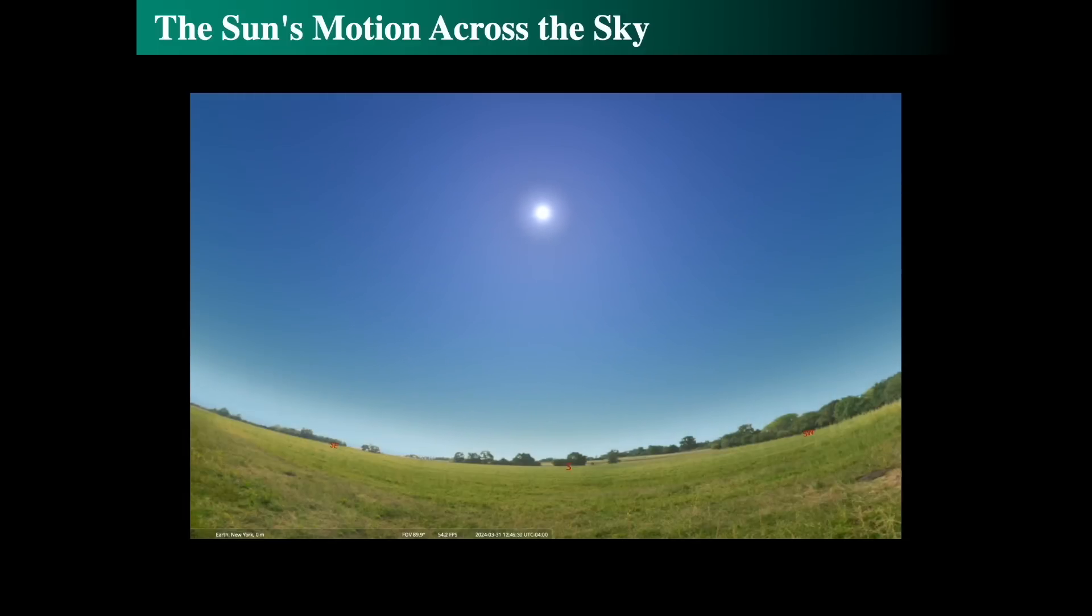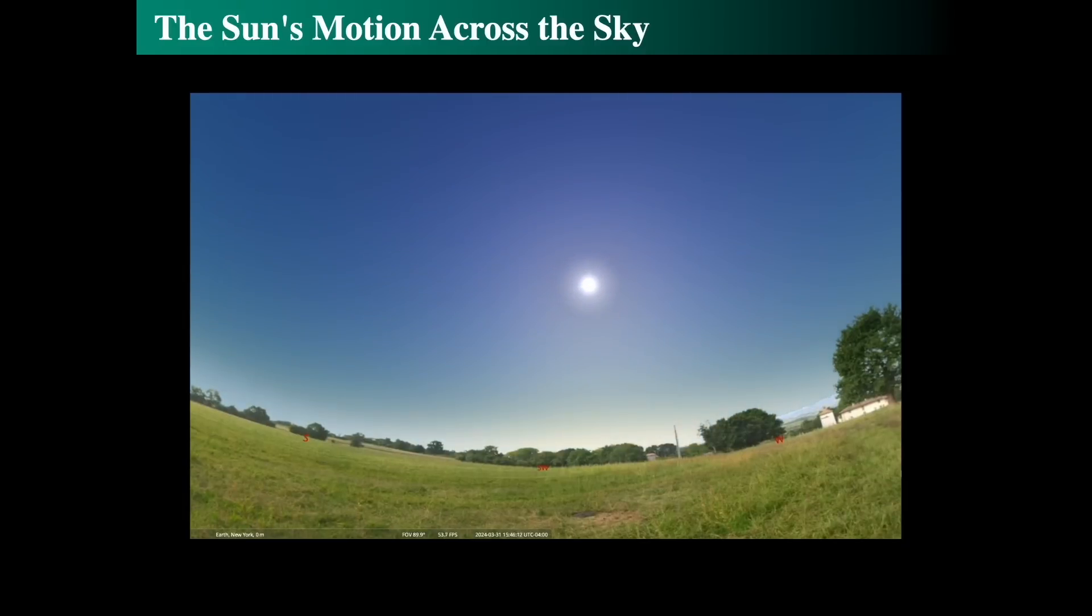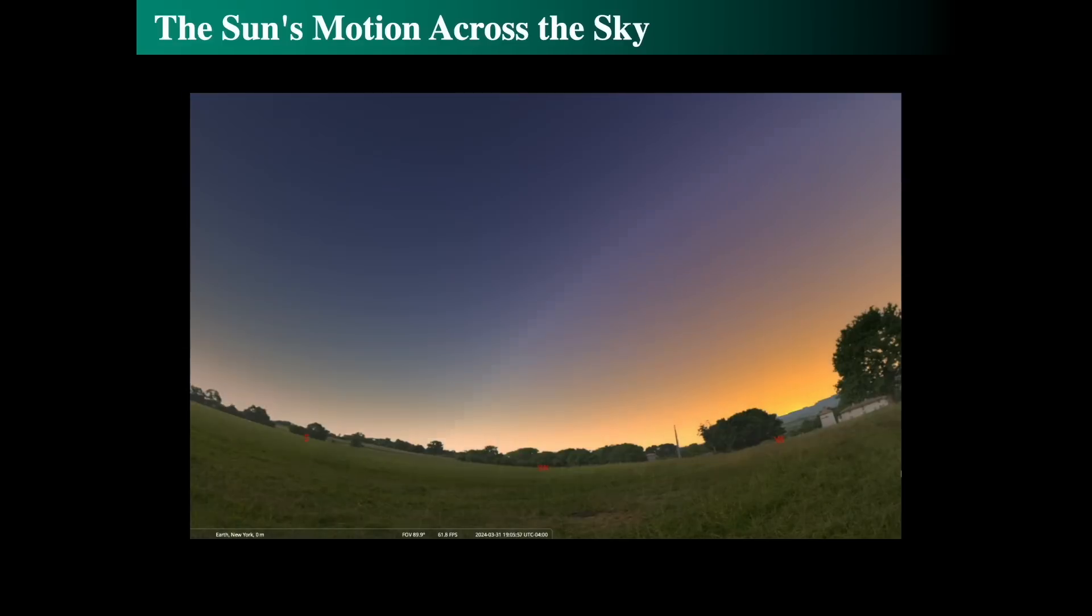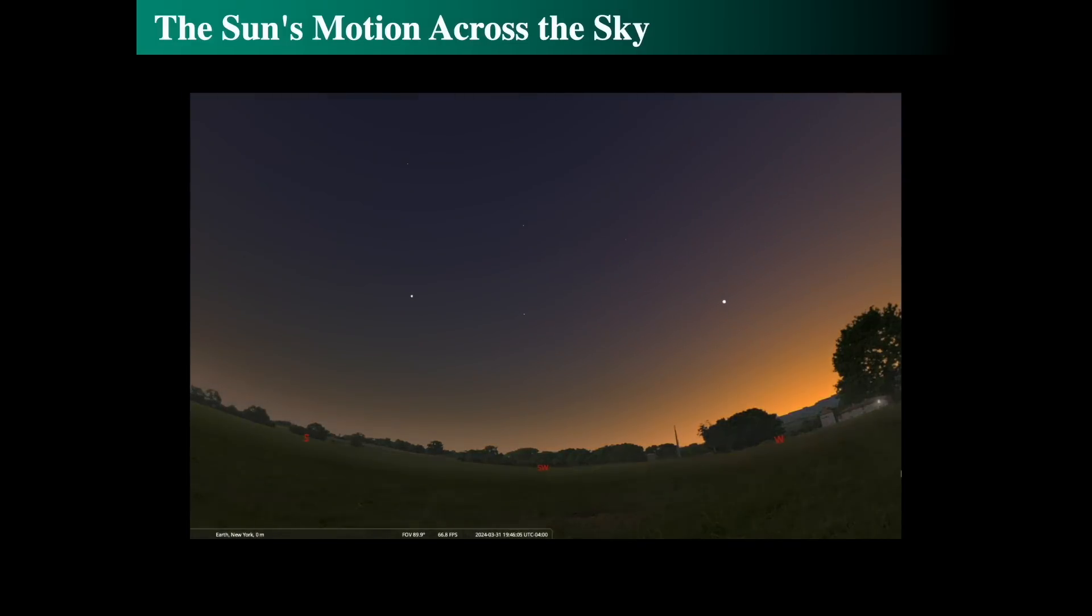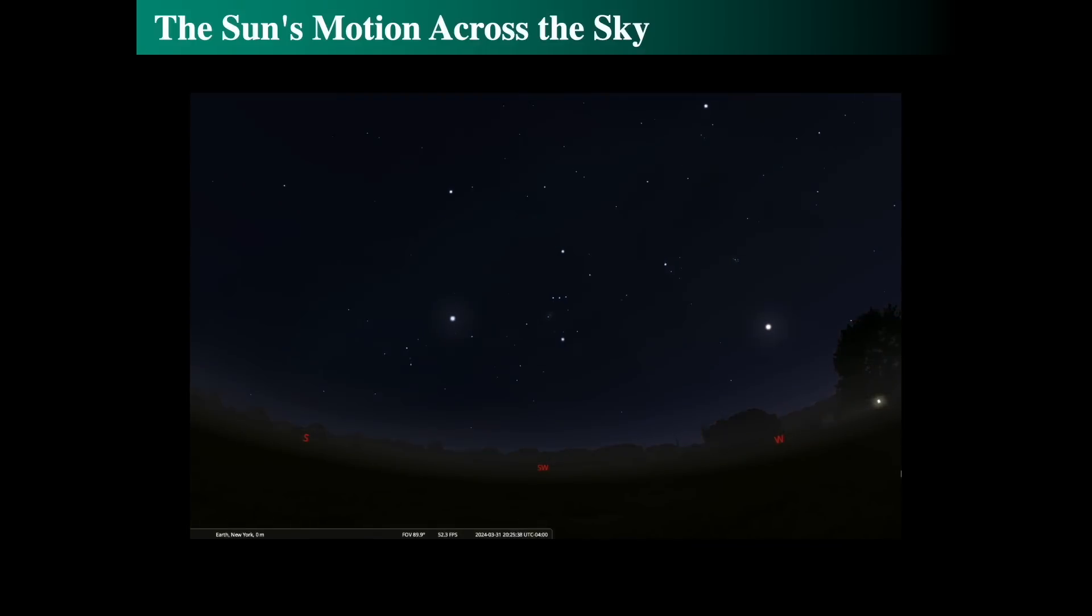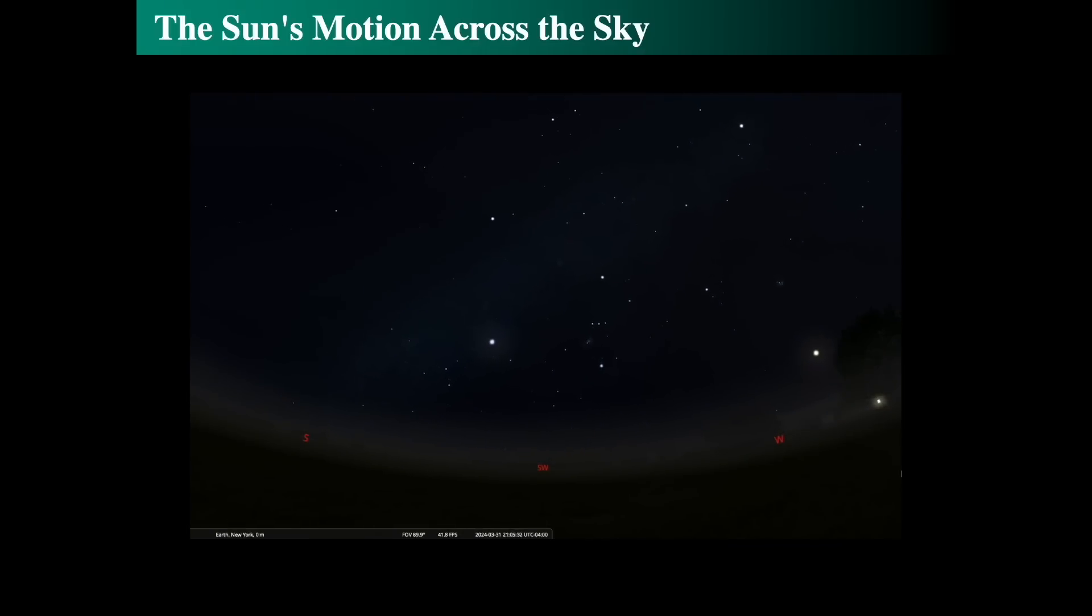However, over time the sun drifts slowly eastward relative to those stars. The eastward drift relative to the stars takes about 365.25 days to return to the same location in the sky. That's one year and therefore a leap day occurs every four years.